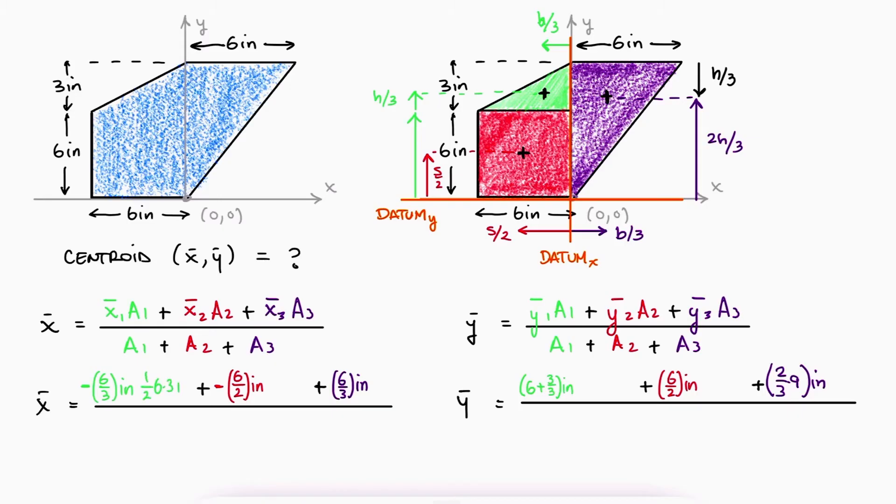The area of the green triangle is one-half of base times height, the area of the square will be s squared, and the area of the purple triangle, one-half of its base times its height.